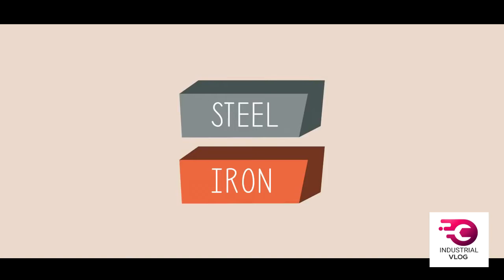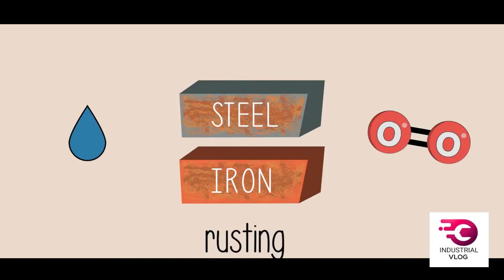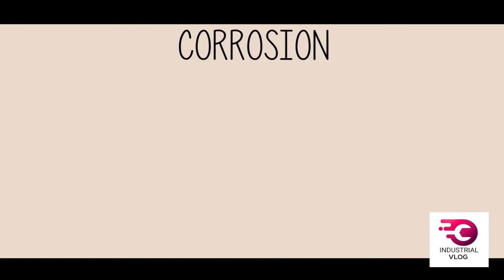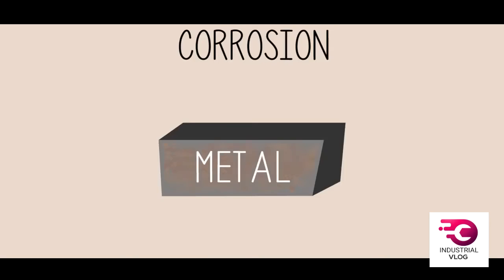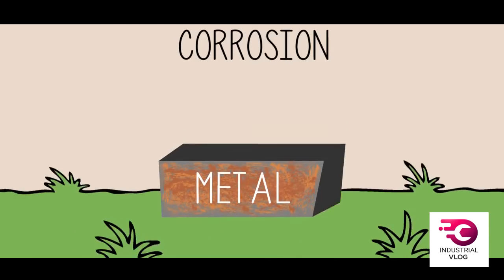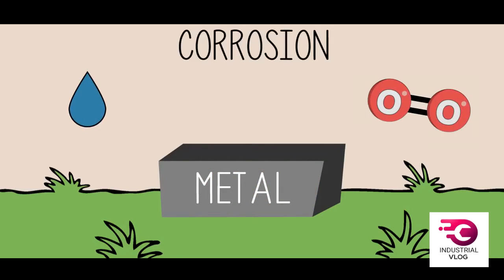When iron and steel are exposed to oxygen and moisture, rusting will occur. Rusting describes the corrosion of iron and steel. The term corrosion is used to describe the breakdown of a metal when exposed to the environment. When we say a metal corrodes, we mean that it has reacted with water and oxygen from the environment to form their respective oxides.